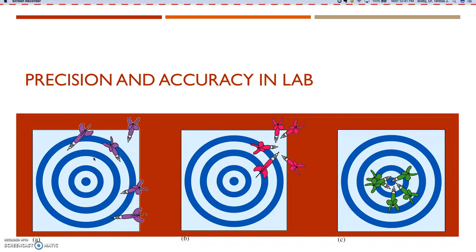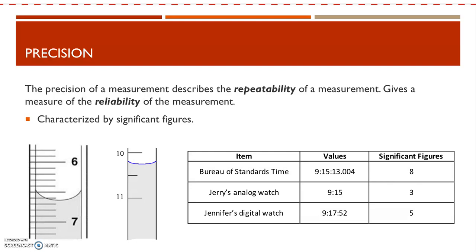Let's think about this in terms of lab, because we're going to be talking about precision and accuracy in lab and measuring those quantities with our data and comparing them to literature values. In lab, precision of a measurement describes the repeatability of a measurement, or it gives a measure of the reliability of a measurement. Is the measurement method reliable? Are you going to get the same answer over and over again?